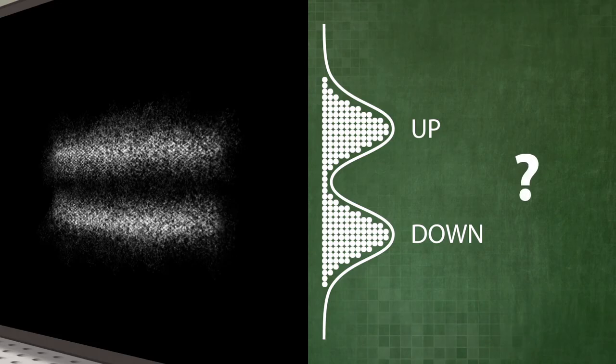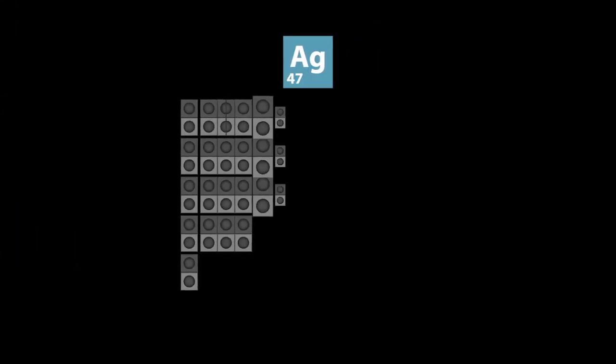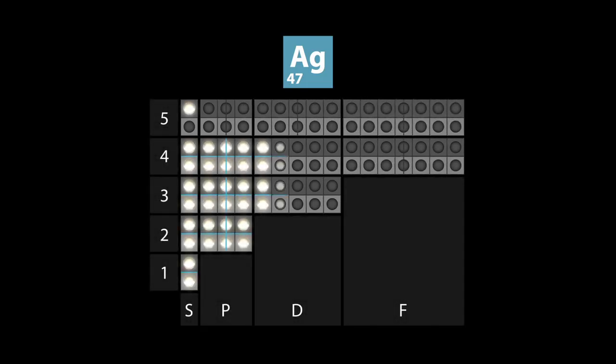How can this be explained? Let us first analyze the electron configuration of a silver atom. One silver atom has a total of 47 electrons.